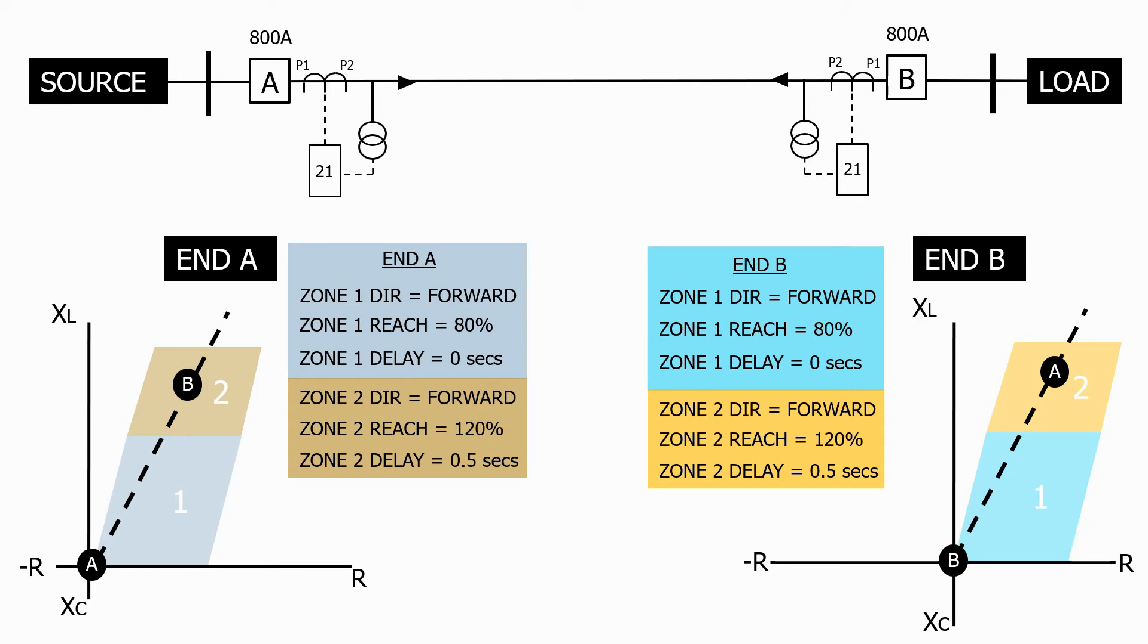Let's now close the circuit breakers and energize the line. Let's now repeat our fault from before at 10% of the feeder length.